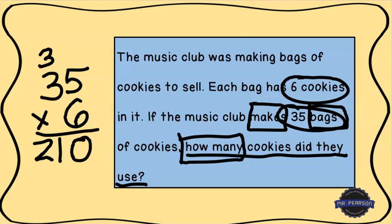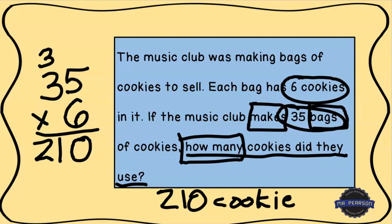When we multiply 35 times six, we end up with a product — that's the answer to a multiplication problem — of 210. The last thing we always need to do is write our answer and label it. In this case we label it cookies, because the question asks how many cookies did they use. They used 210 cookies. So if they make 35 bags with six cookies in each bag, they need 210 cookies. I hope your answer matched mine, and if not, I hope you understand my thinking. I'll see you next time with another word problem to solve together.